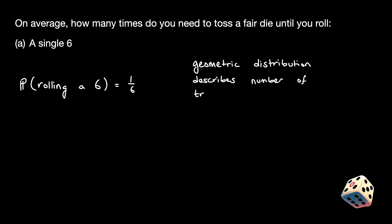Alright, let's move on to the solution. Let's start with part A. We know that the probability of rolling a six on any given toss is one-sixth. Further, we know that a geometric distribution describes the number of trials until an event with probability p occurs.